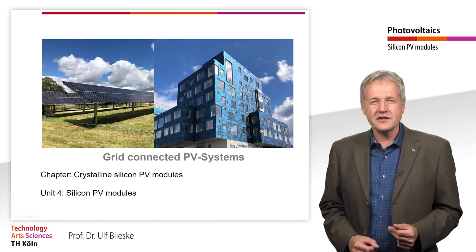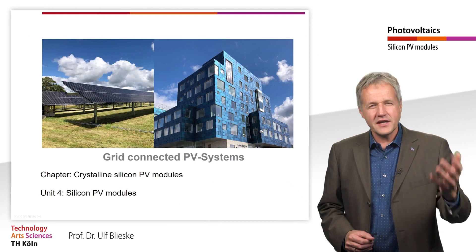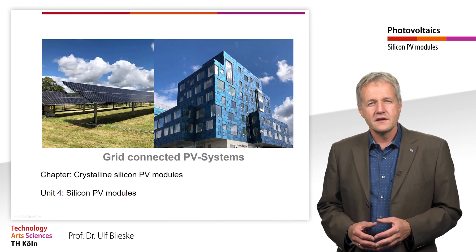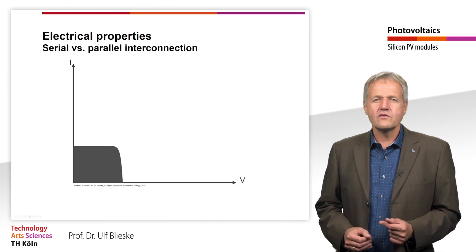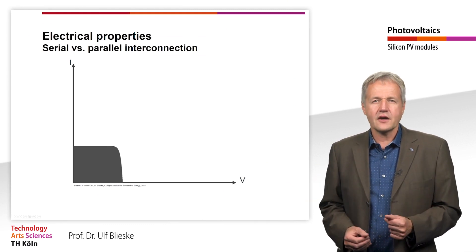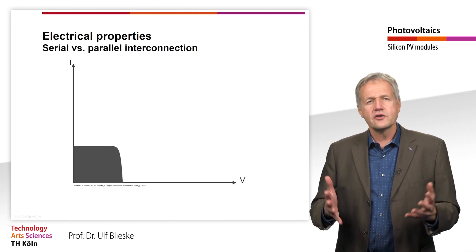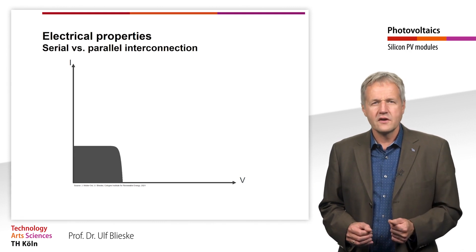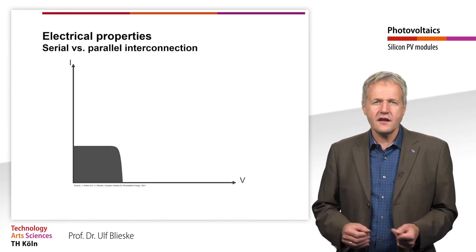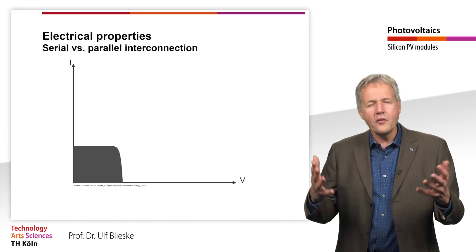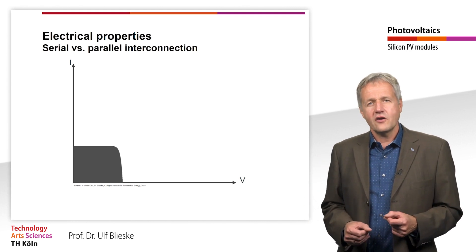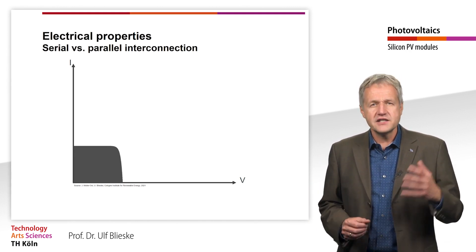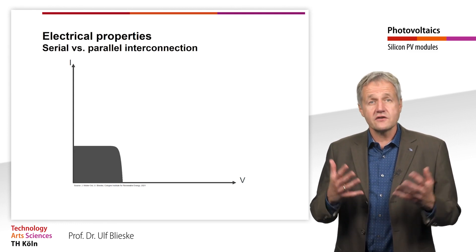Welcome to the next teaching unit in the chapter on crystalline silicon solar modules. In the last unit we dealt with how solar cells are connected to form cell strings in solar modules. We have seen that shading has a great influence on the performance of such a cell string, and therefore bypass diodes are integrated into the circuit.